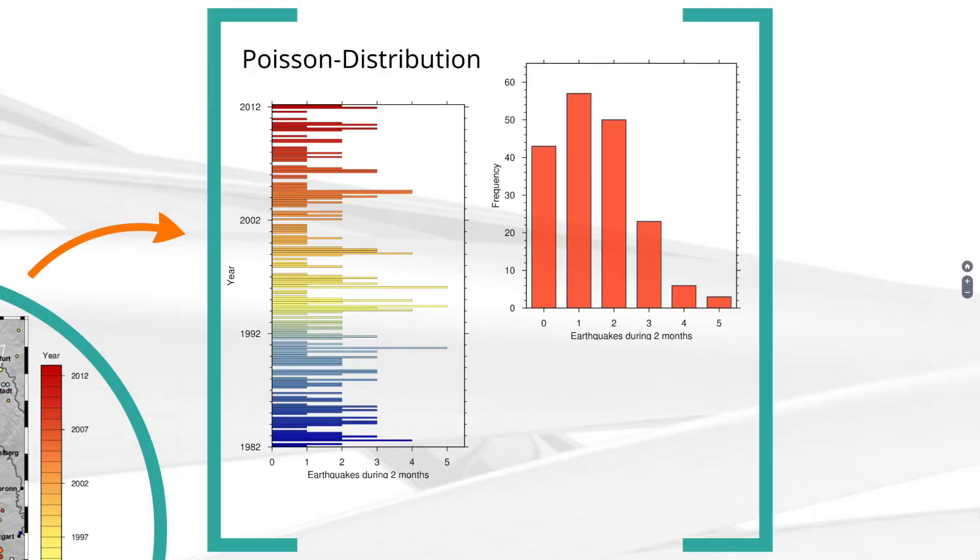In order to confirm this impression, we test the data for Poisson distribution and ask how often do 5 events occur every 2 months, and how often 4, 3, 2, 1, or none at all. This is what this histogram shows, which indicates the number of time windows n and the number of the corresponding quakes k in it. Hence, we see that no main shock occurred in 43 time windows and exactly 1 in 57 of them.